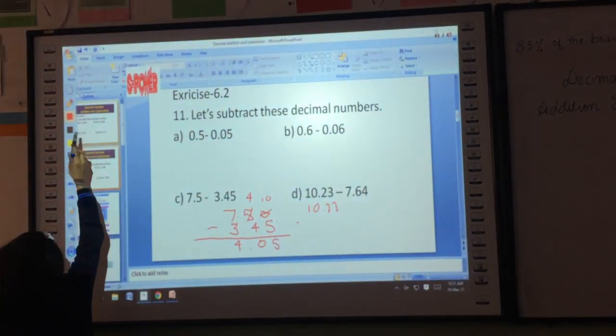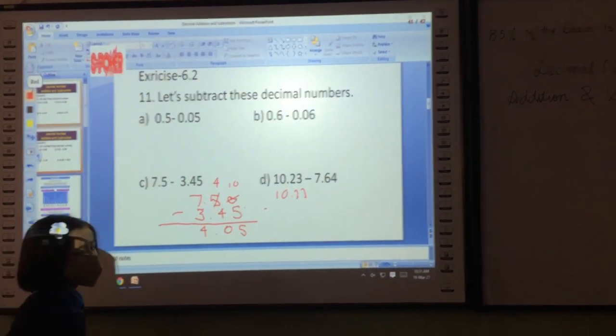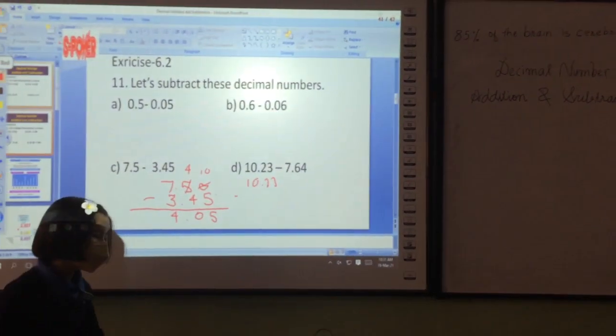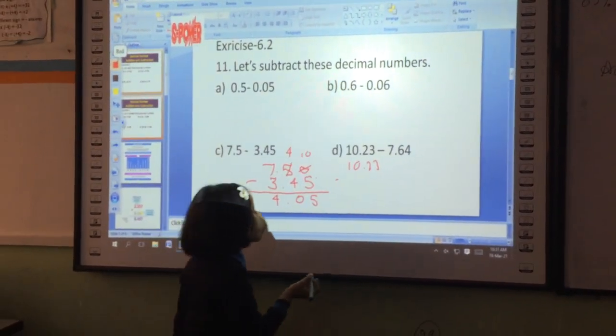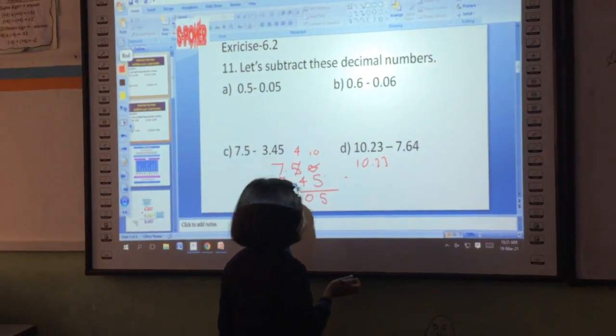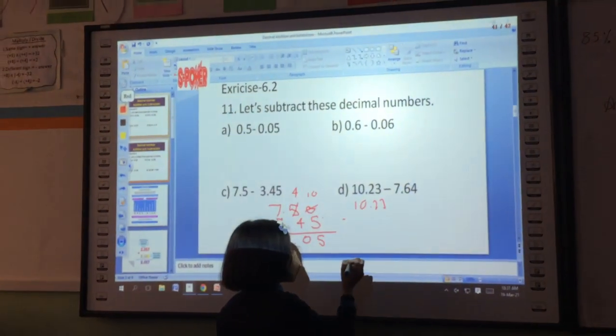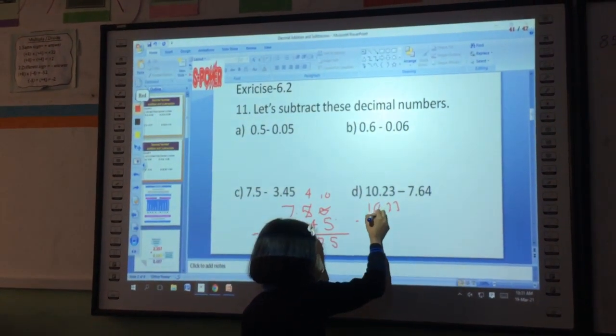So here we have two whole numbers. One is 10 and next is 7, yes? So 10 is a 2-digit number, 7 is a 1-digit number. So where to write that 7? In one's place. One's place, yes.